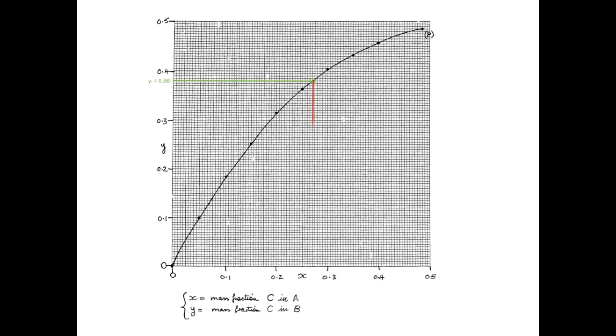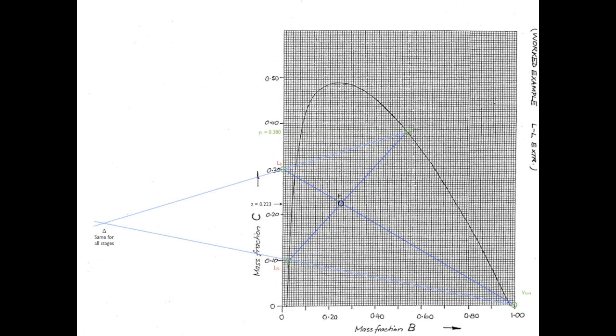The x-axis is the mass fraction of C in A, and the y-axis is the mass fraction of C in B. The value y₁ equals 0.380, which we read off from point V₁ — we read across to the curve and drop down to the x-axis — gives x₁ equals 0.270. This is the concentration of solute C in the B solvent. We mark that value on the axis, identify point L₁, and V₁ and L₁ are joined by a tie line, drawn here in yellow.